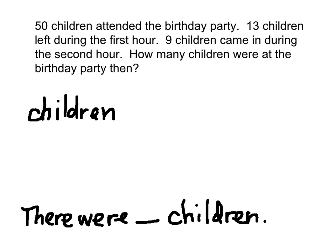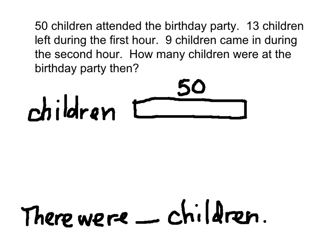First sentence — read the problem and chunk it. That means stopping when you see a punctuation mark. '50 children attended the birthday party.' Period — stop. I know that 50 children attended the birthday party, so I'm going to draw a bar for the children right here. And I'll place a 50 right there.